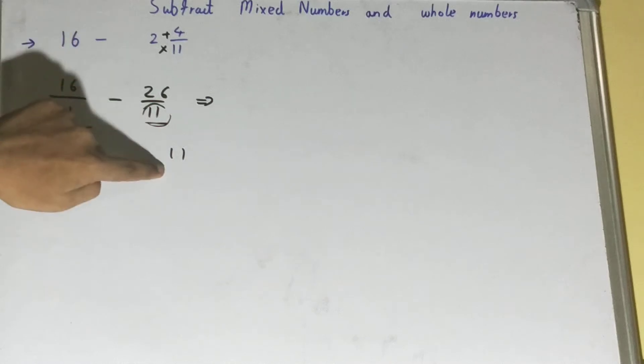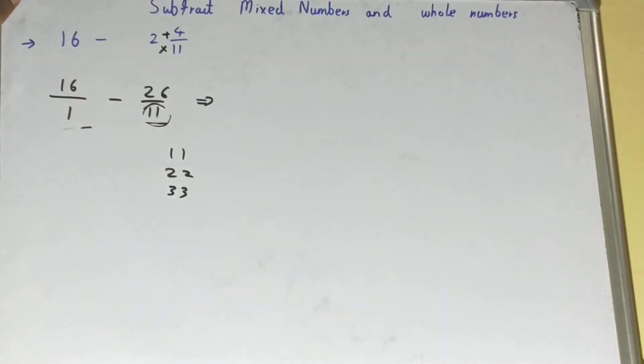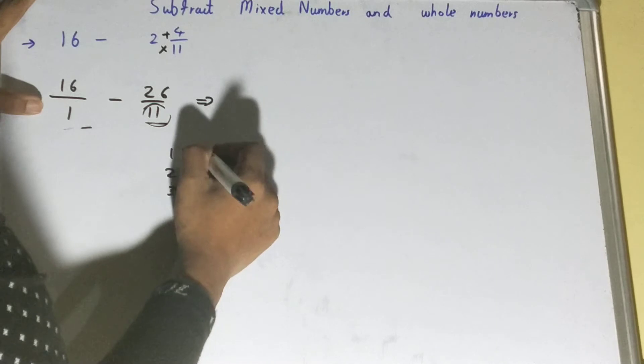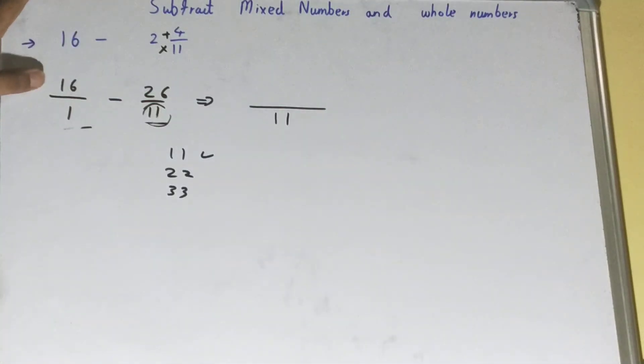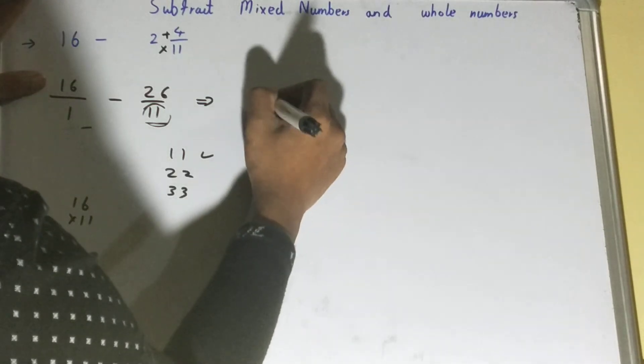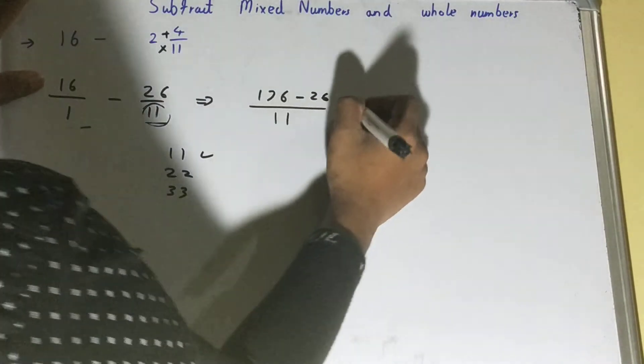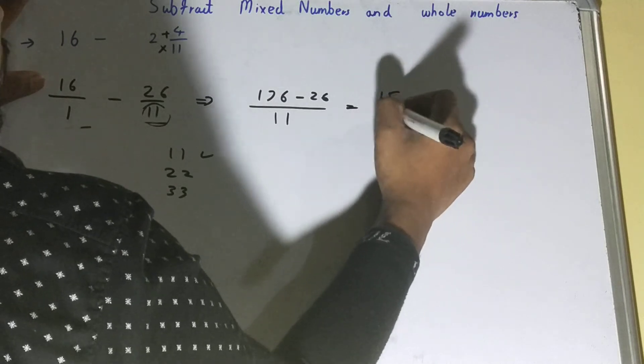So whether 11 can be divided by 1 or not? Yes, it can be divided, so your LCM will be 11. 16 times 11 is 176 minus 26. Further on we can solve it. We will get it as 150 upon 11.